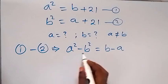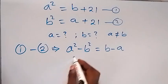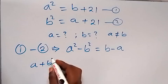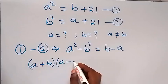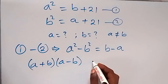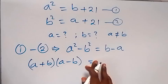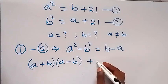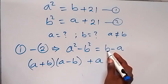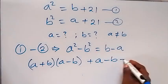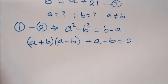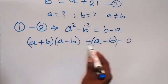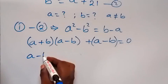From here we can apply the difference of two squares: a squared minus b squared becomes (a plus b) multiplied by (a minus b). Then let's take everything to one side — minus a becomes plus a, and b becomes minus b — equal to zero. We discover that (a minus b) is common, so when we factor that out we get (a minus b)...